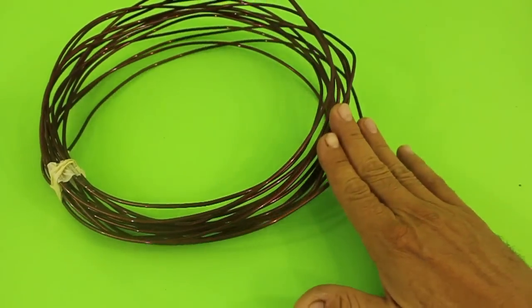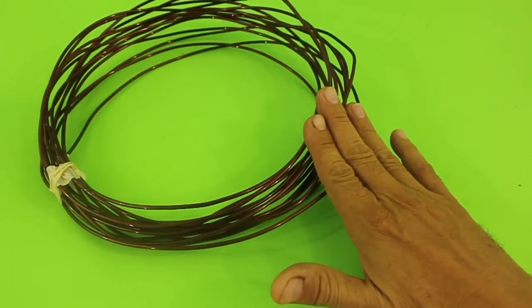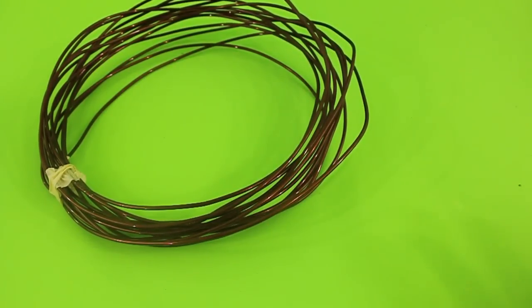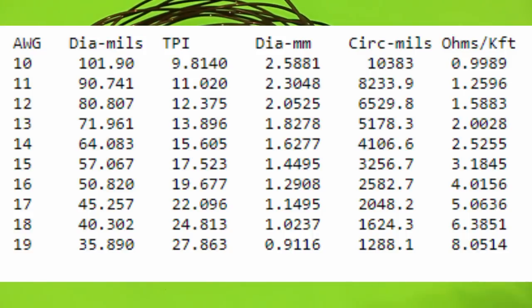This for example is size 10 AWG. There are tables of copper wire that give you all the parameters of the wire. You can see that for size 10 the wire has a resistance of 0.9989 ohms for every 1,000 feet of length.